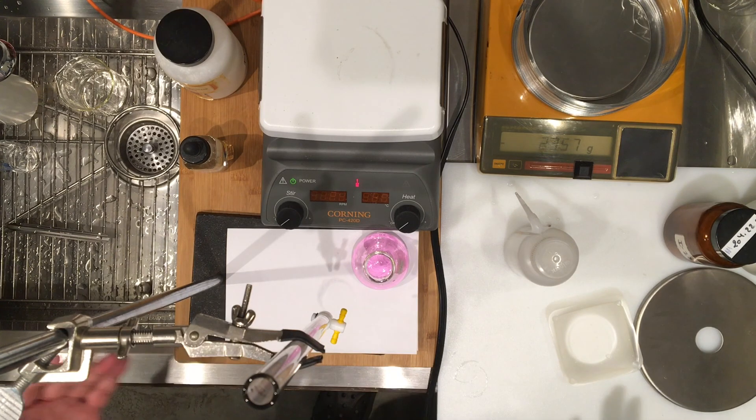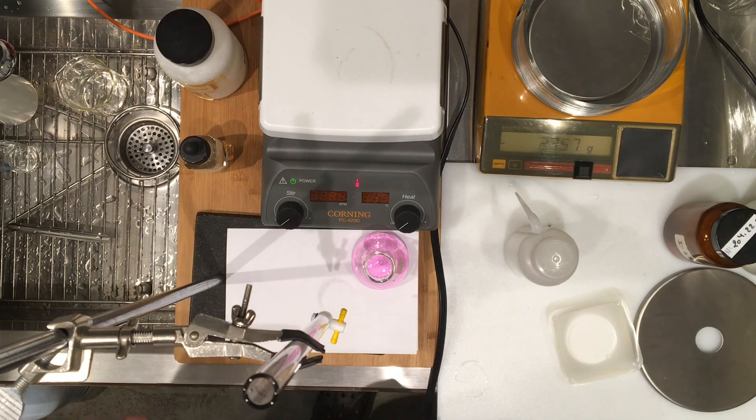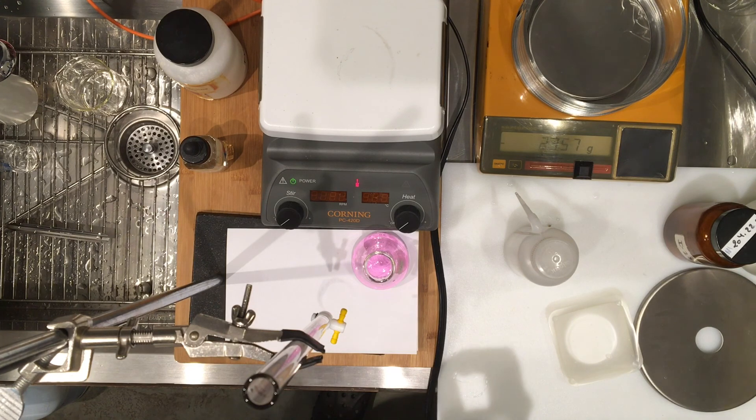The titrations are exactly done the same way, but you also need the masses of each KHP sample. So I'll provide you with the mass of each KHP and I'll provide you with the volume of the titrant sodium hydroxide, and that's all you need to calculate the molarity of sodium hydroxide.